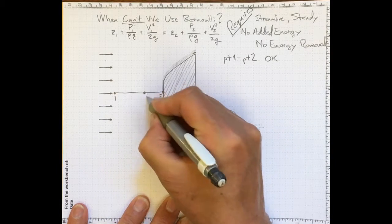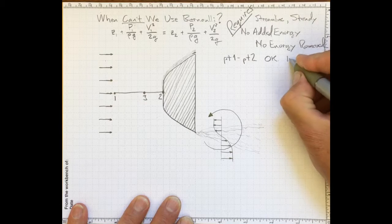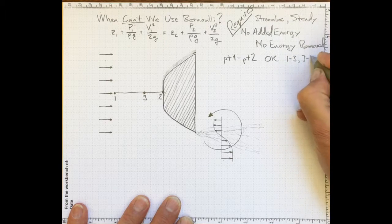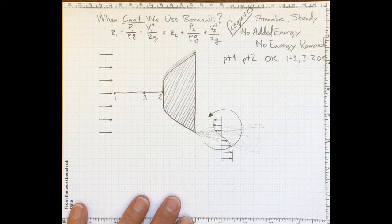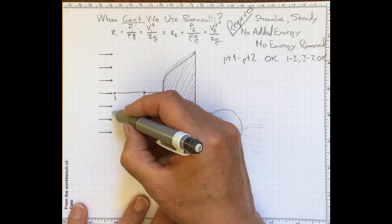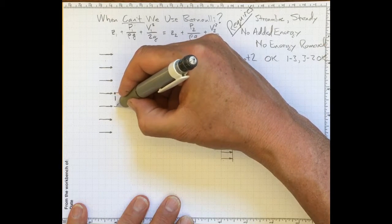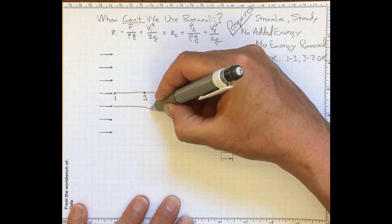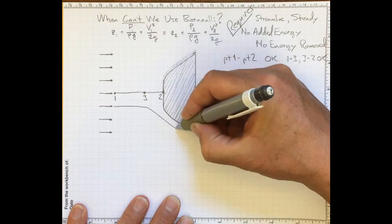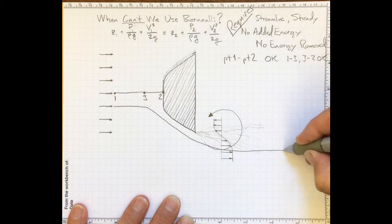What about from location one to three? Or from three to two? They're both okay too. Now how about another streamline that's a little further away here? Say one that goes off from here and flows in like that. It's diverted by the body and the flow accelerates and then it follows a path something like that.